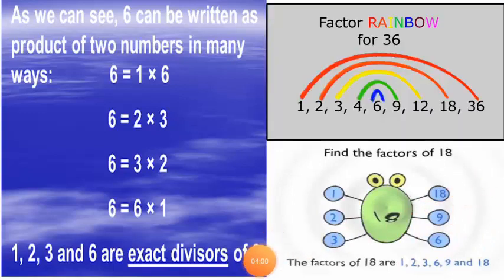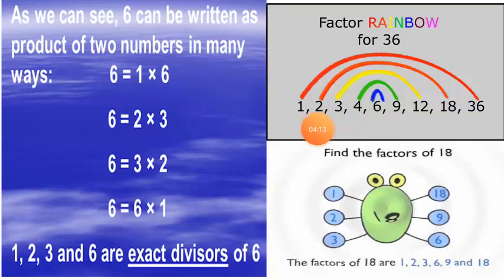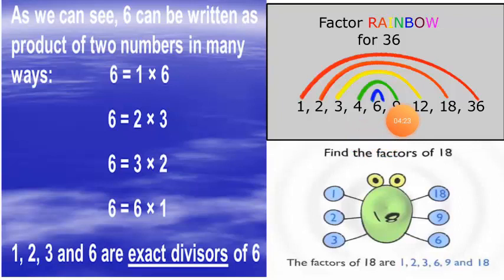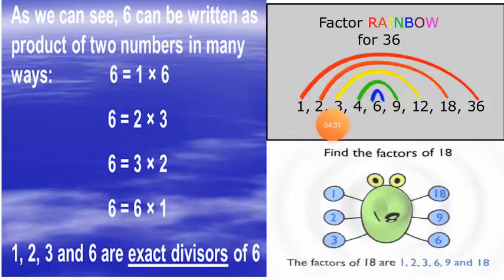Now let's take the number thirty-six. When we multiply one with thirty-six we get thirty-six; two goes into thirty-six eighteen times; three goes into thirty-six twelve times; four goes into thirty-six nine times; and six goes into thirty-six six times. So the factors of thirty-six are one, two, three, four, six, nine, twelve, eighteen, and thirty-six.